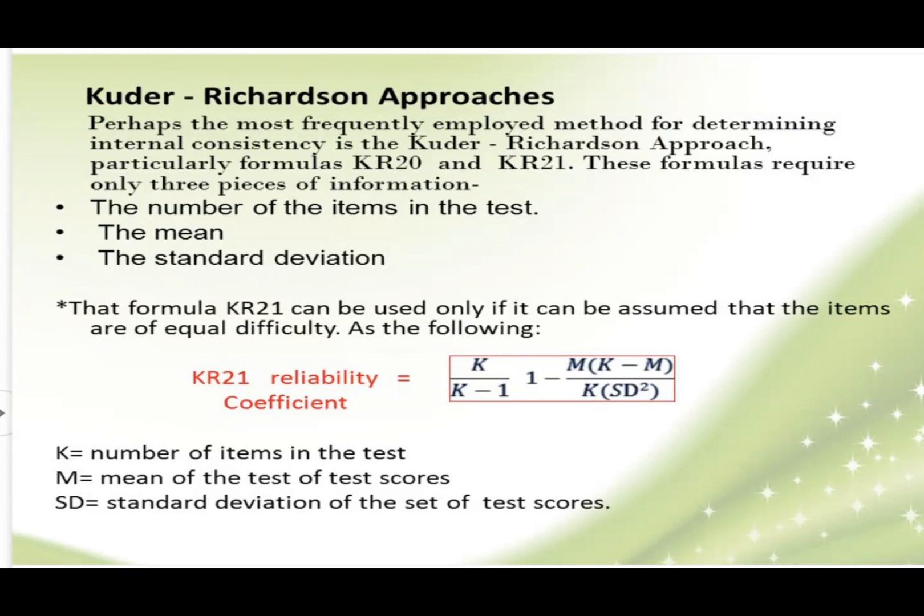So we have the formula to solve for the reliability. We have the quantity K or the number of items divided by the number of items minus 1 multiplied by 1 minus the mean multiplied by the number of items minus the mean divided by your number of items times the standard deviation squared.